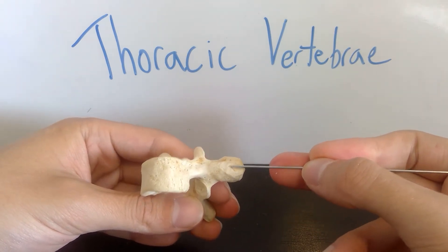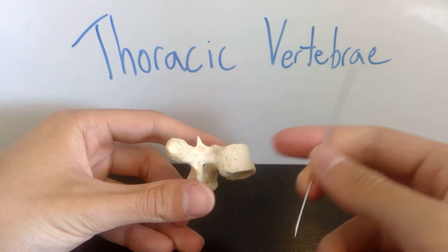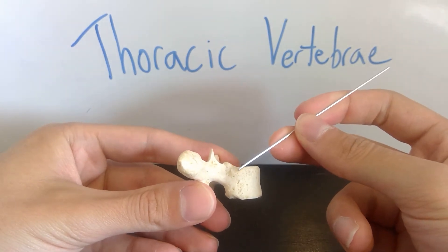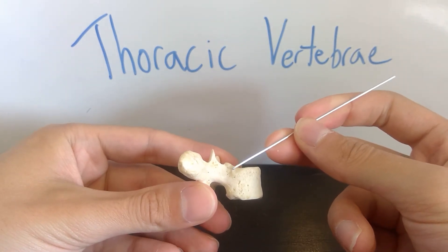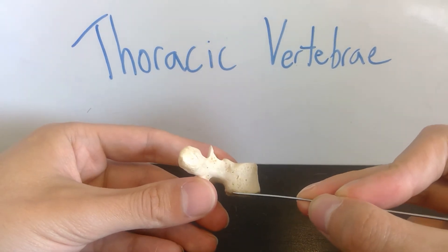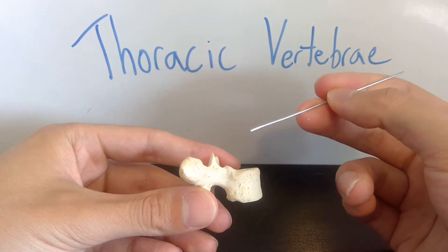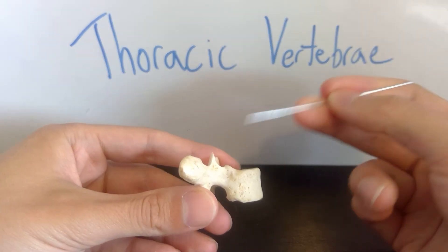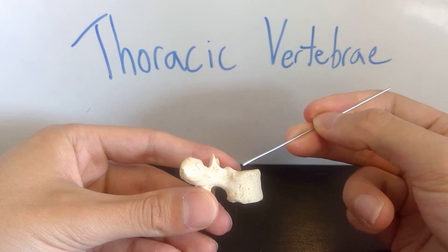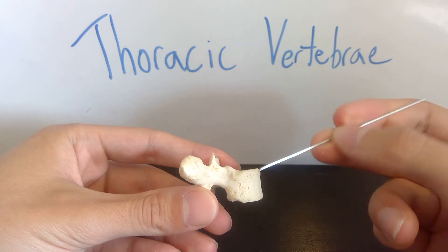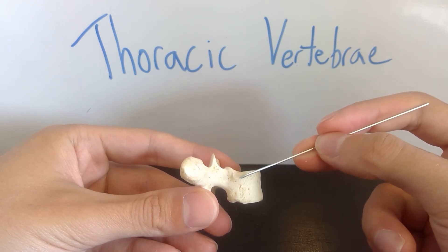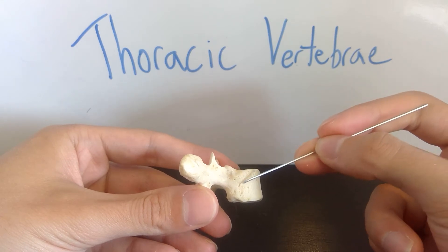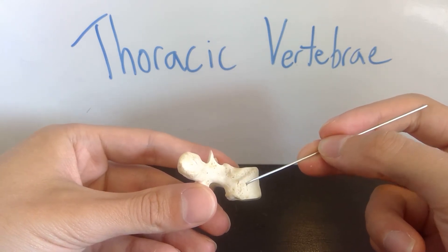You might also notice there are demi facets on the body of this vertebra. I like to think of 'demi' as half, so they're like two halves of a facet. If you can imagine another thoracic vertebra above it — which would be T3 if this is T4 — the T3 inferior demi facet and the superior demi facet of T4 together make one full facet, and that's where the rib of that number will articulate.